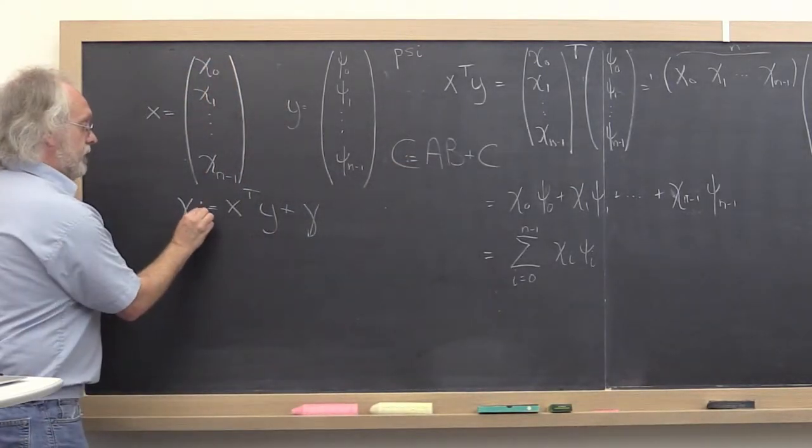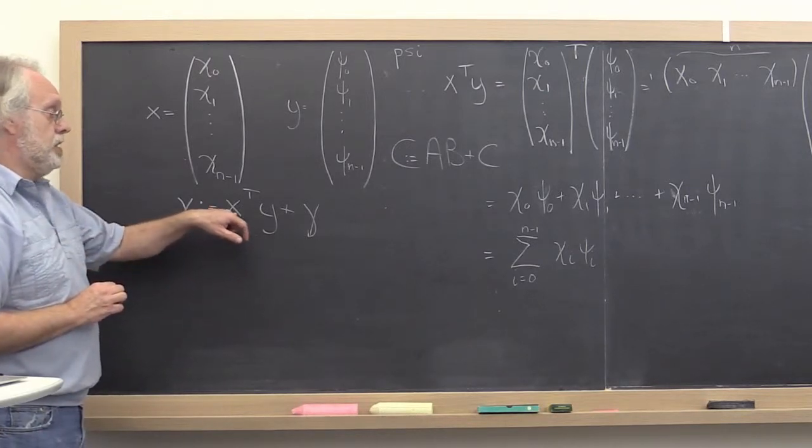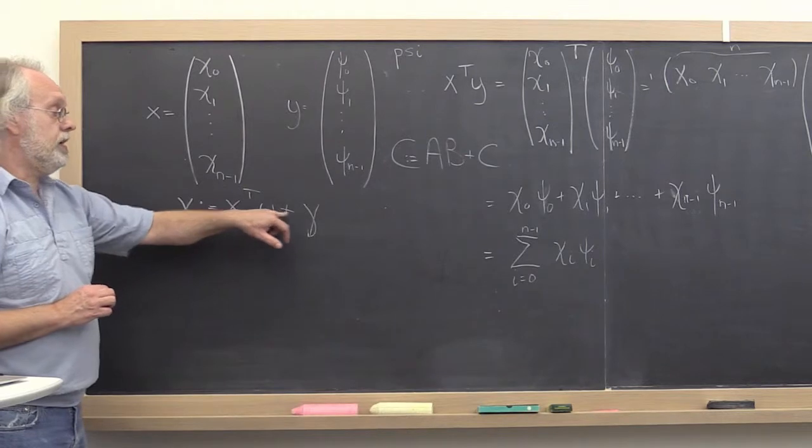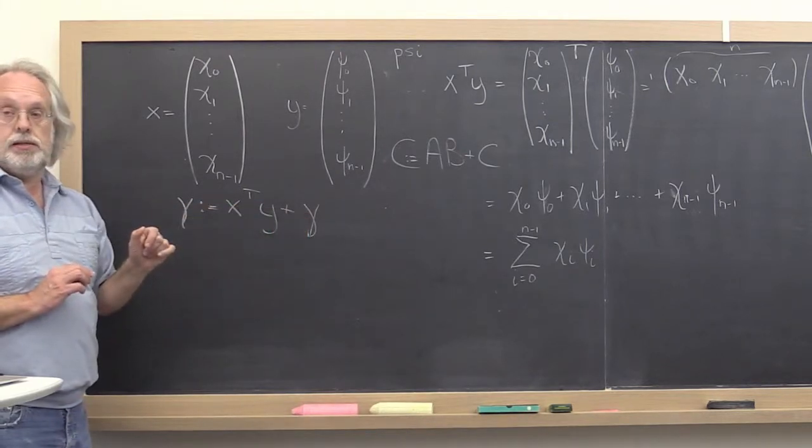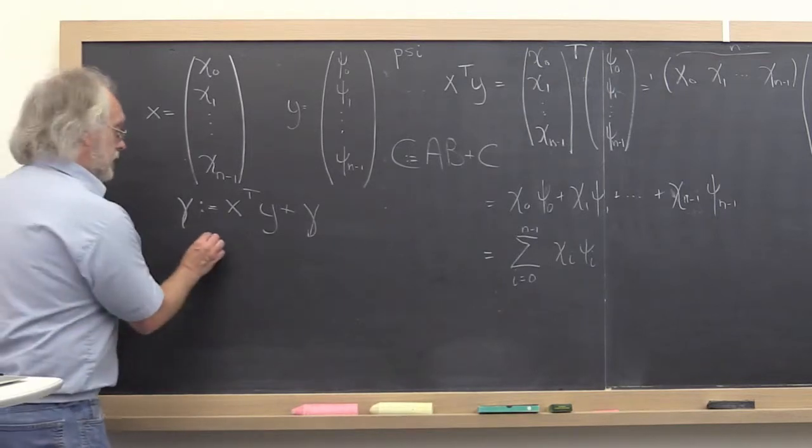So this is the operation that we really want to look at. Gamma becomes the dot product of x and y added to gamma. Now, what is a pseudocode that might implement this?